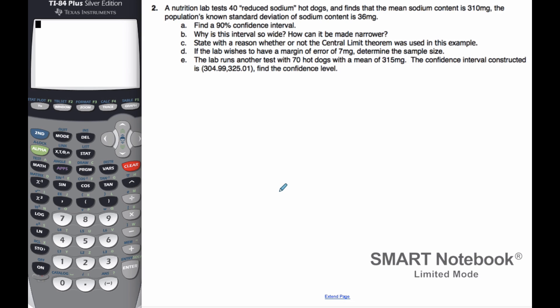Okay, in this example we're going to talk about confidence intervals and confidence level again. Whenever I read a statistics problem and come across a number, I like to write down what it means. A nutrition lab tests 40 reduced sodium hot dogs. Well, 40 must be n since it's my sample size.